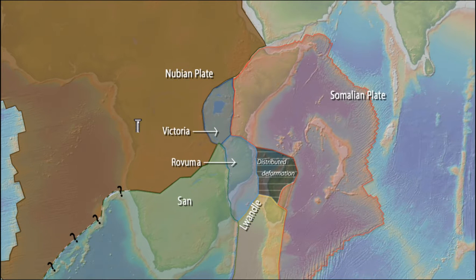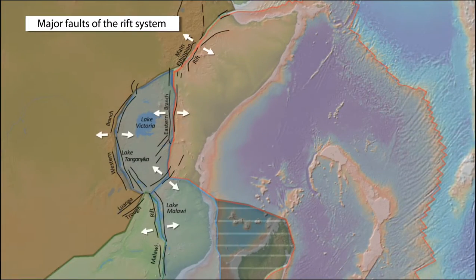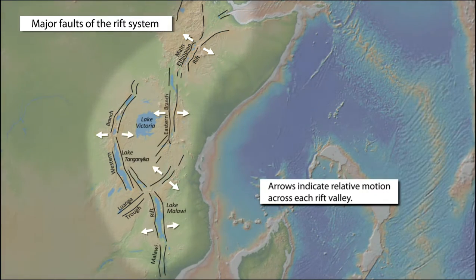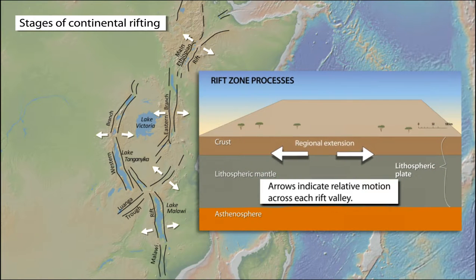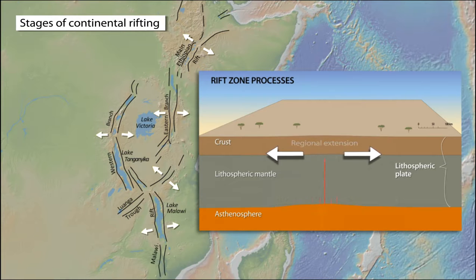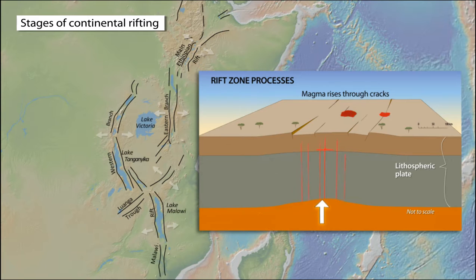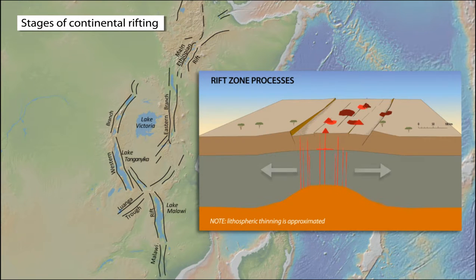These plates are internally rigid but are in relative motion, so faults and resulting earthquakes are concentrated along their boundaries. The East African Rift system extends for thousands of kilometers, but the style and rate of the rifting varies along that length. Rift zones form during extension of the lithosphere. As the lithosphere rises and thins, magma rises towards the surface. Faults break the brittle crust and horst and graben structures form. Volcanoes dot the rift valleys.